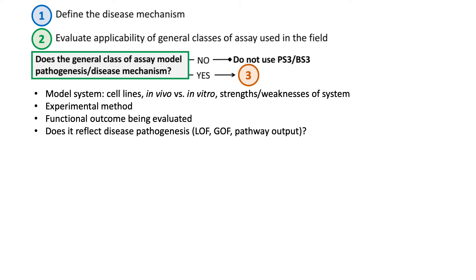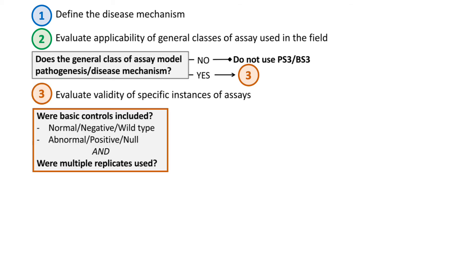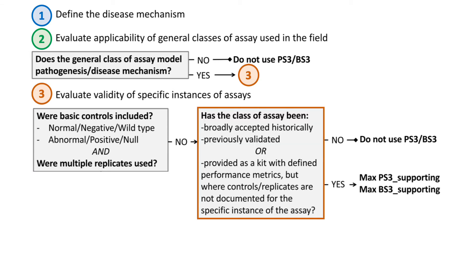If this general class of assay is appropriate, it is important to remember that many different labs may generate functional evidence using the same general class of assay, but differences in the specific methods used and the level of validation provided by each group might affect the validity of an individual assay iteration for use in clinical variant interpretation, so each specific instance of an assay should be evaluated independently. Key considerations in evaluating the validity of a specific instance include the use of basic experimental controls like a wild type and a null control, as well as evidence that the experiment and the results have been replicated. In the absence of these basic controls, the recommendation suggests that PS3 and BS3 should not be used.